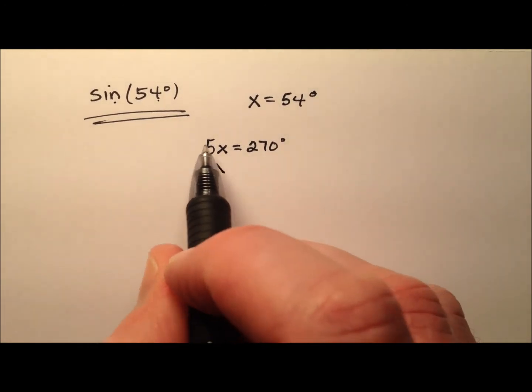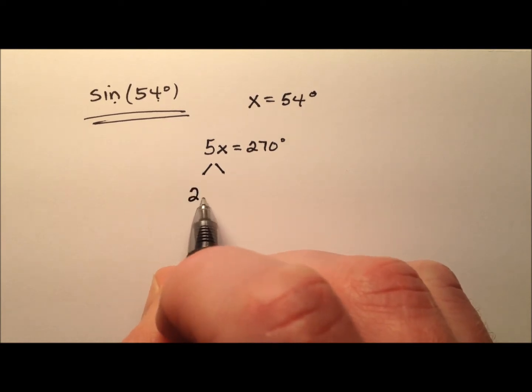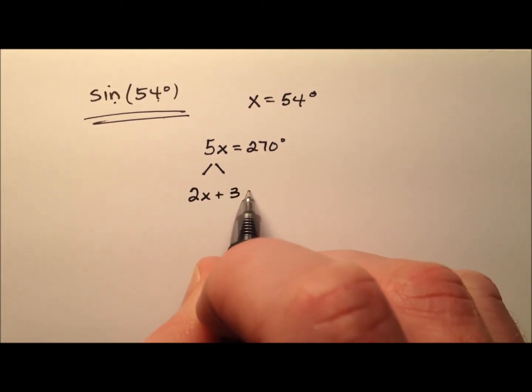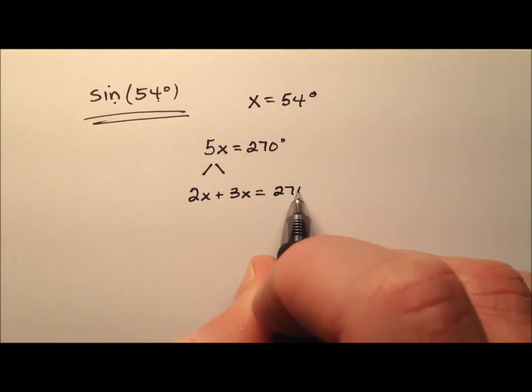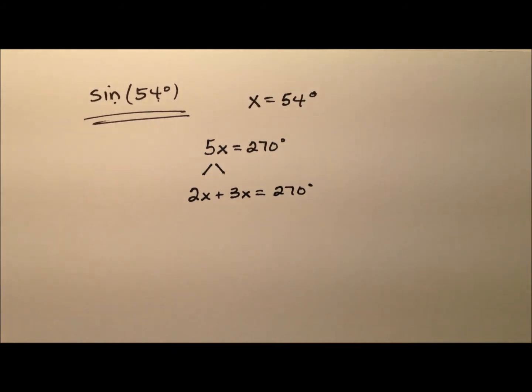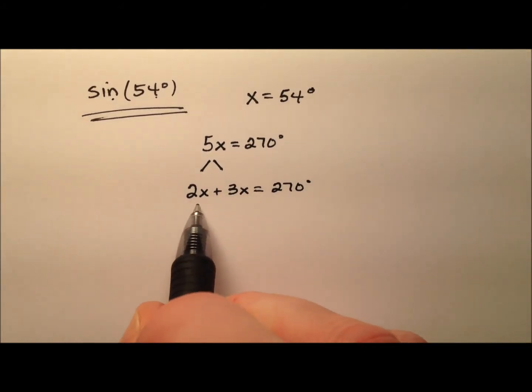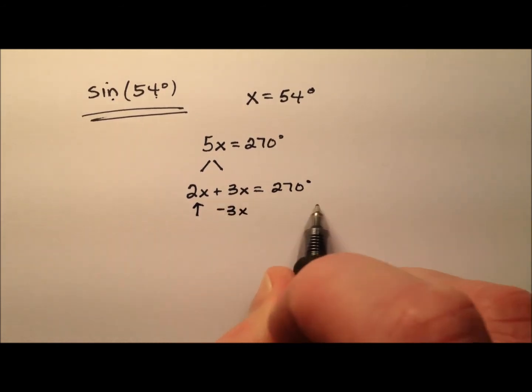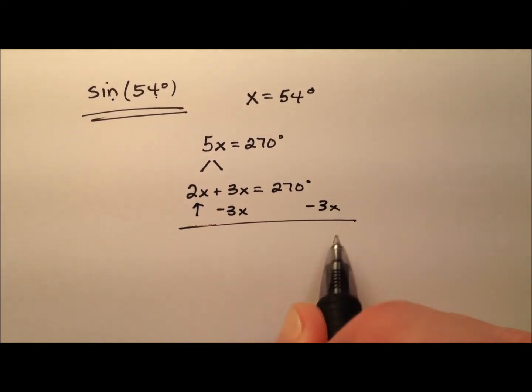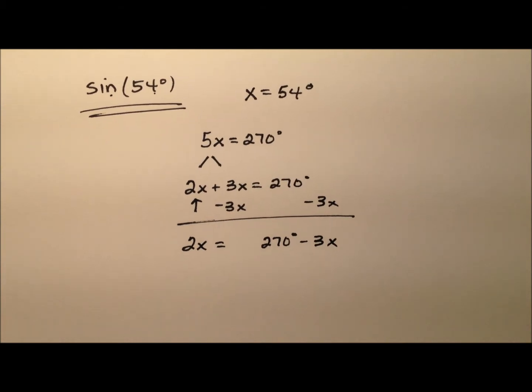And then the next step, I'm going to break this 5x down into a 2x plus a 3x, and that's going to equal 270 degrees. And finally, I'm going to solve for this 2x by subtracting 3x from both sides. So 2x equals 270 degrees minus 3x.